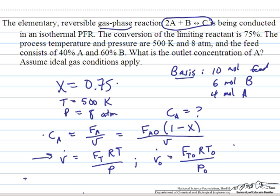So I have written down some of the given information here. We are told that the conversion is 75%, we are given temperature and pressure, and we are told that the temperature does not change in this problem because it is isothermal, and we will also assume that the process pressure does not change with the reaction. What we want to solve is the outlet concentration. I have assumed a 10 mole basis for the feed, and based on the given compositions of 60% and 40% we end up with 6 moles of B and 4 moles of A in the feed.